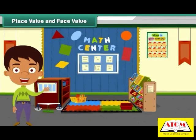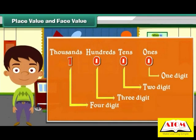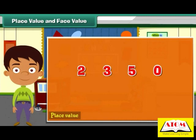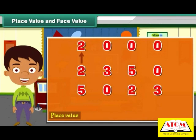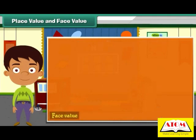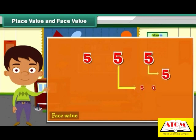Place value and face value. Ones, tens, hundreds, and thousands are all place values of a digit. Place value of a digit helps us determine its value. For example, the digit 2 is at the thousands place in 2,350 whereas it is at the tens place in 5,023. Hence, the value of 2 in 2,350 is two thousands, and in 5,023 it is two tens, that is 20. Face value of a digit is the digit itself. The face value of digit 5 in 555 is five at each place, but the place value of five is different at each place. Moving from left to right, the values of the three fives in 555 are 500, 50, and 5.